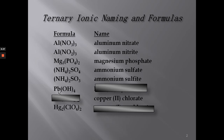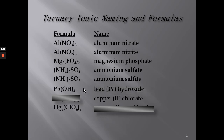Here we have a lead and a hydroxide. Each hydroxide is negative one, and we have four of them, so this is negative four. Therefore this must be lead(IV) hydroxide, or plumbic hydroxide.